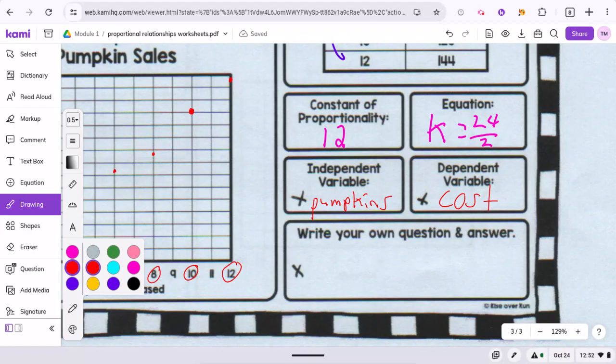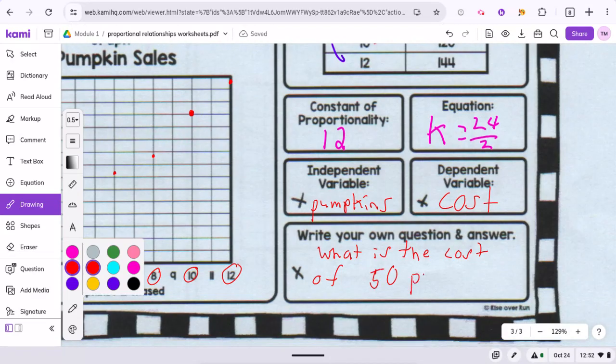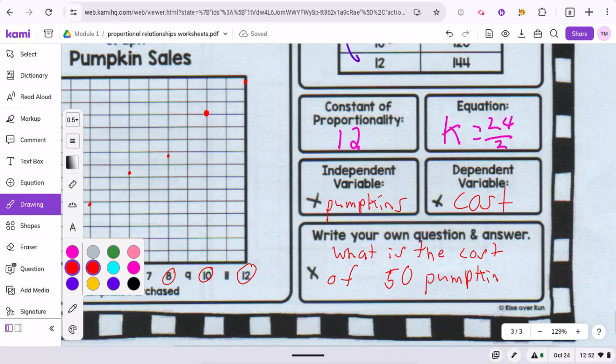And for this one, you can say something like, what is the cost of 50 pumpkins? And you'd be able to substitute that in there for the 50 pumpkins. You know the rate is 12.